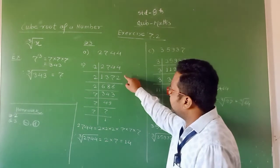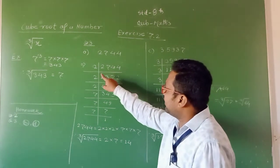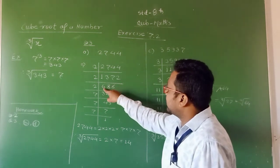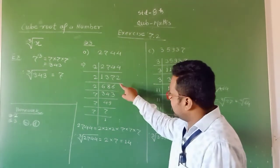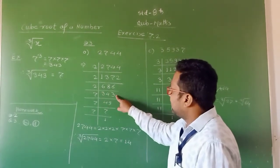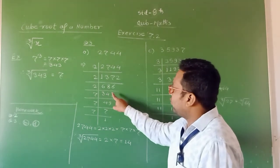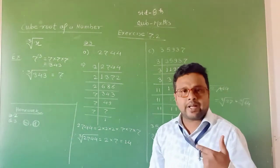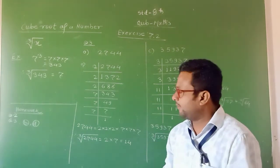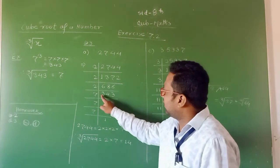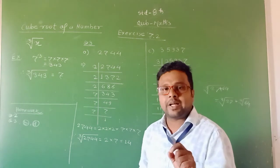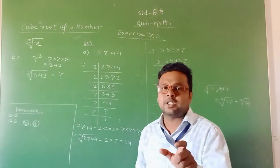Again, 1372 is an even number, divisible by 2. After division, we get 686. This is also even, so again divisible by 2, and we get 343. Now, 343 — we check divisibility by 3: 3 plus 4 plus 3 equals 10, not divisible by 3. So 343 is not divisible by 3.